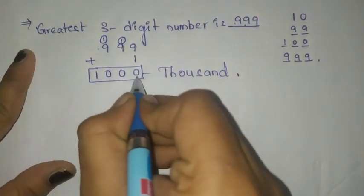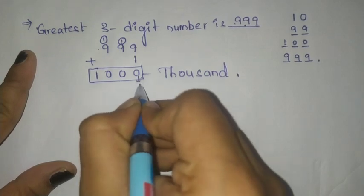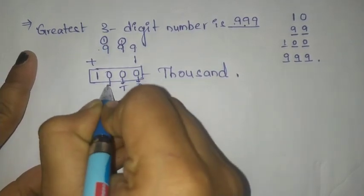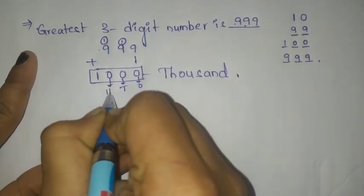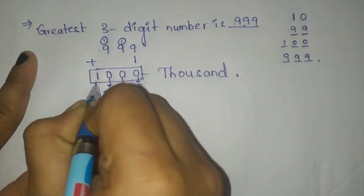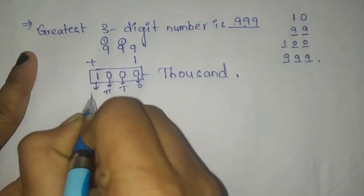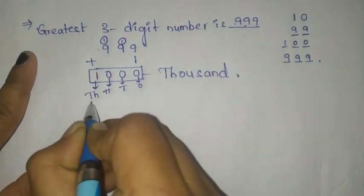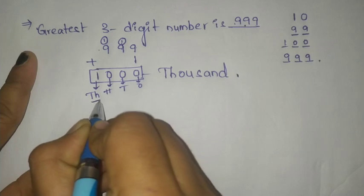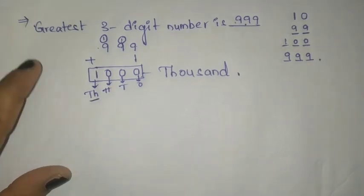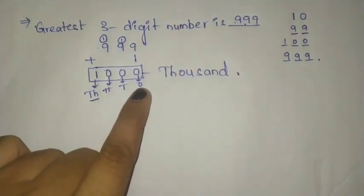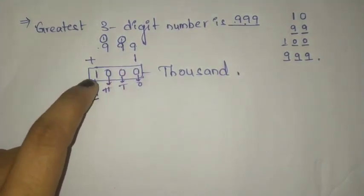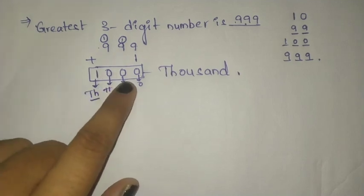In 1000, this is the ones place, this is the tens place, this is the hundreds place, and this is the thousands place. 1000 is represented with TH. Ones, tens, hundreds — this is the thousands place.